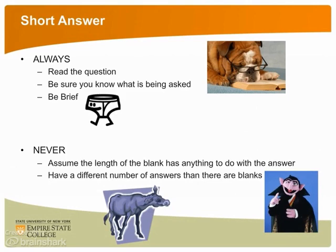There are certain things you always want to do when dealing with short answer questions. Always read the question fully and make sure you understand what is being asked. Always be brief in your answer. There are also things you never want to do: never assume the length of the blank has anything to do with the length of the answer, and never have a different number of answers than there are blanks. For example, if a question has three distinct blanks, the instructor is looking for three distinct answers.